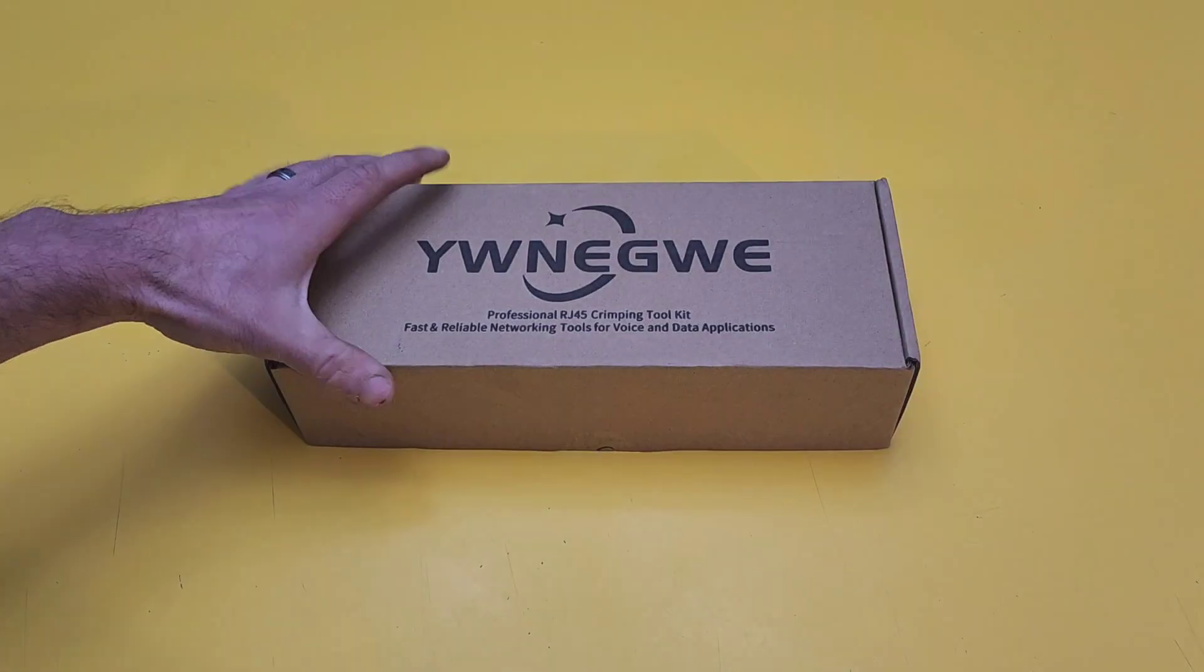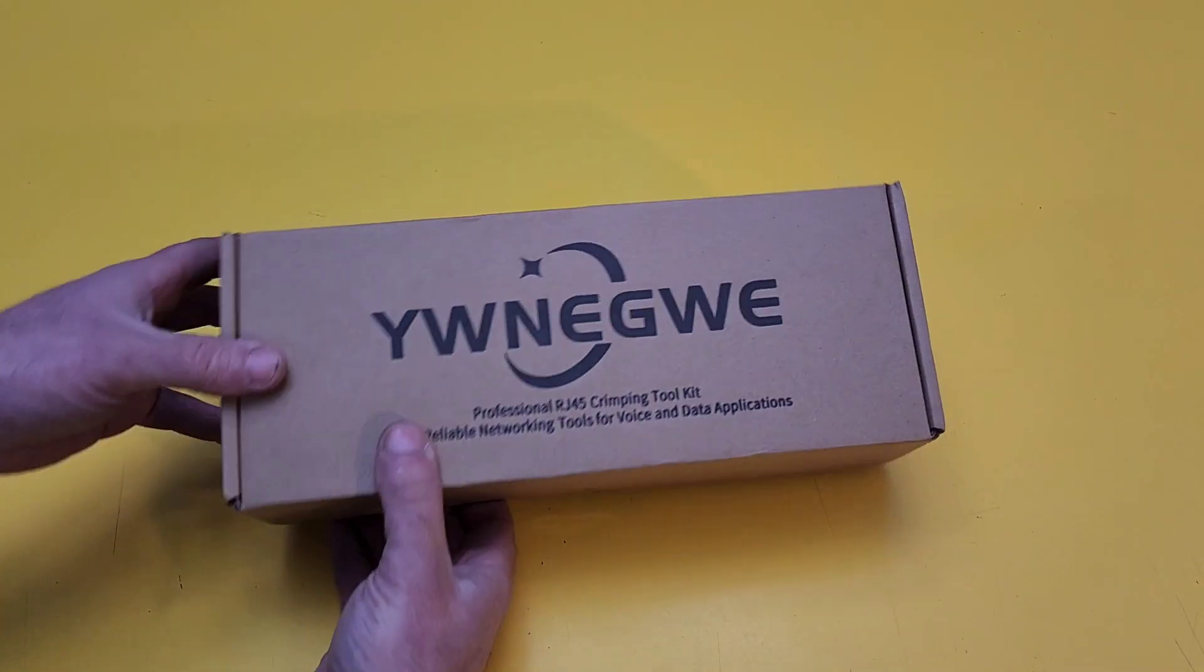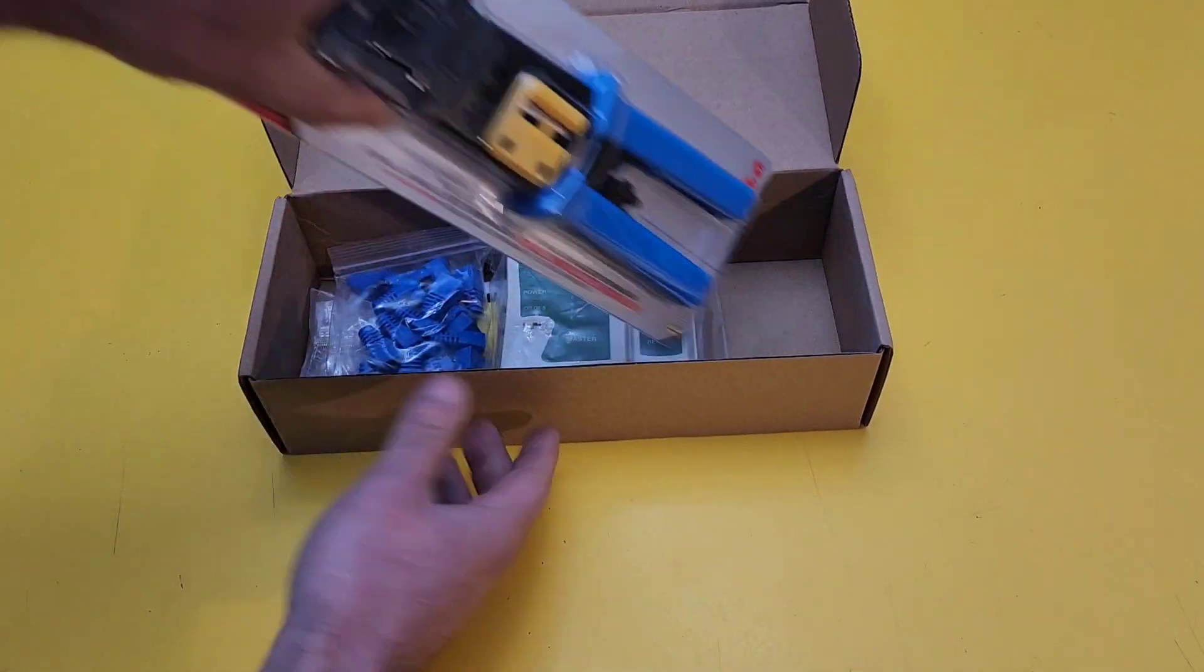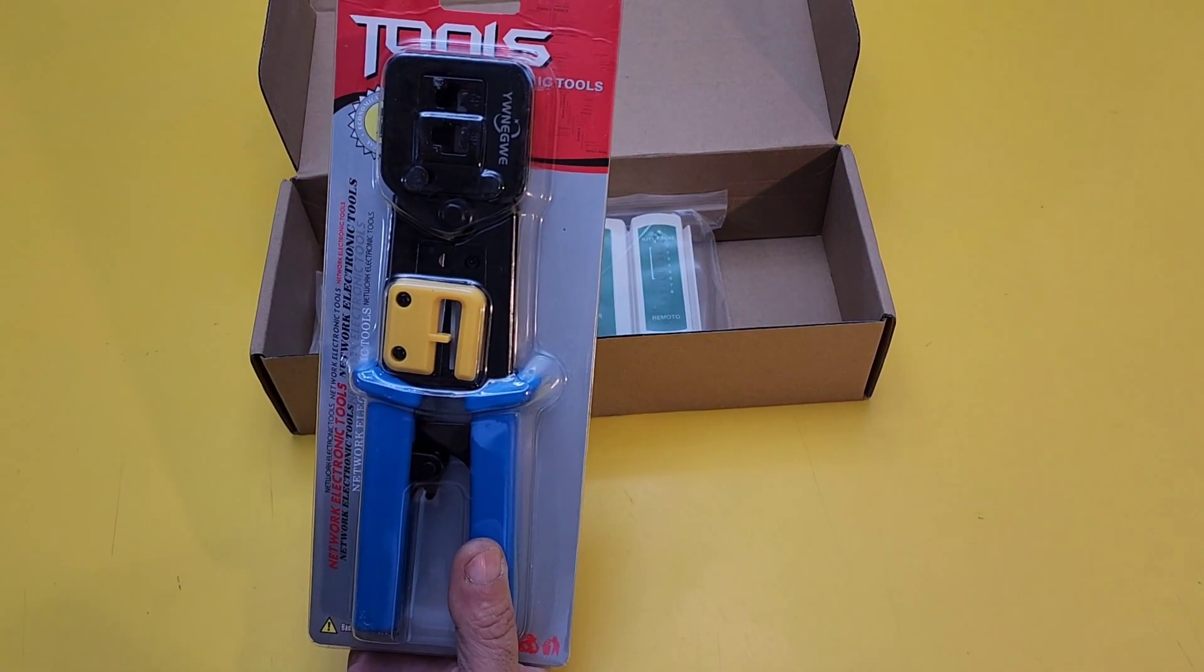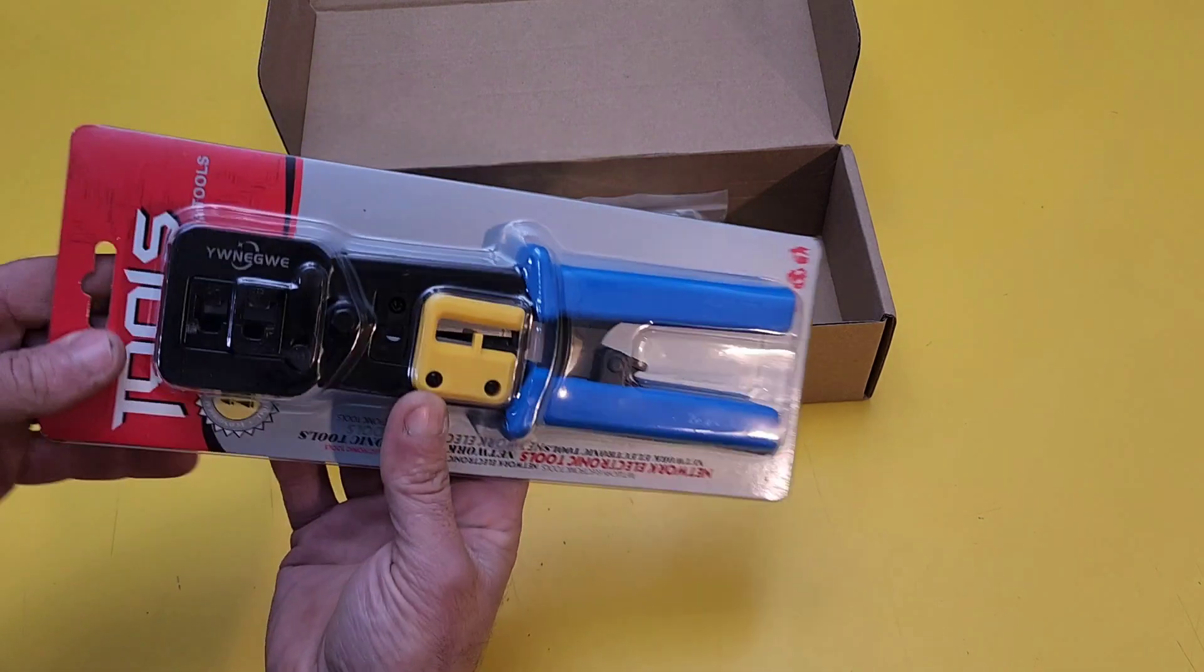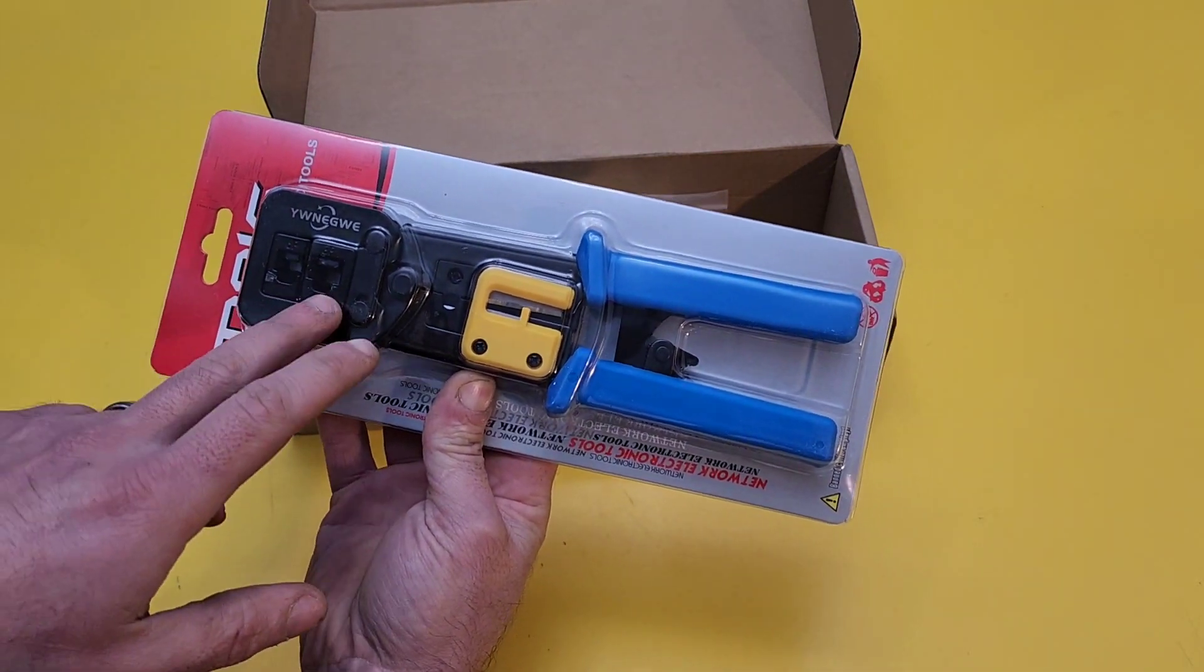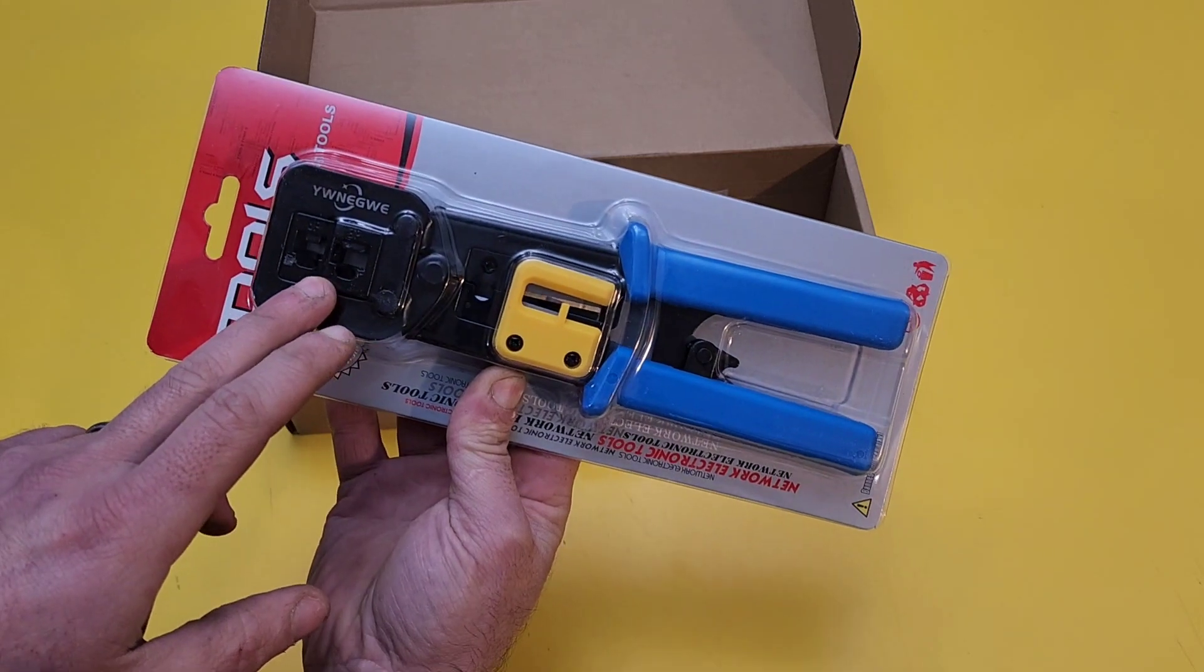So let's open it up and see what it looks like. Alright, so this is the tool kit. Let's open it up and see what it looks like. So here we have the RJ45 crimping tool itself. It's got both a 6-pin and an 8-pin. One's for the RJ45, one's a RJ11.